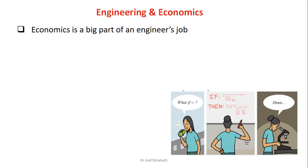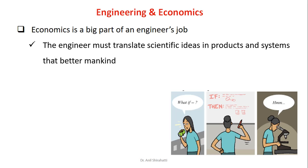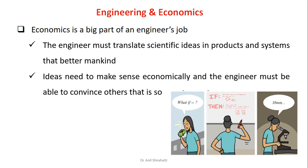Economics is a big part of an engineering job. An engineer must translate scientific ideas into products and systems for better mankind. Ideas need to make economic sense, and engineers must be able to convince others that this is so. For example, if I am designing a shaft with a diameter of 30 mm and length of 200 mm, I could use mild steel at around 60 rupees per kg, but I should not randomly select stainless steel at 350 rupees per kg. Manufacturing costs all get added up, so as an engineer, having knowledge of economics at the design stage itself helps me decide which material to choose.